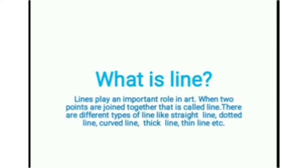First, what is a line? Lines play an important role in art. When two points are joined together, that is called a line. There are different types of lines: straight lines, dotted lines, curved lines, thick lines, thin lines, and so on. Line is very important for drawing — if you want to draw any type of image, line is essential. Without line, you cannot draw anything.